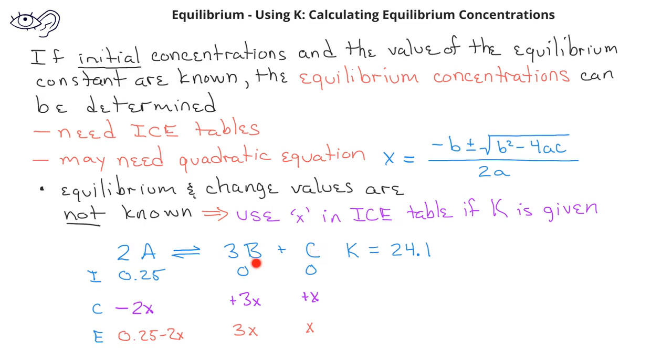For the amount that B changes, since it's in a 3 to 1 ratio, we use 3X in the change row. And for A, since it has a 2 for the coefficient, we know that A changes by 2X. In order to find the equilibrium values, we simply take the initial value plus the change value to get the equilibrium values.